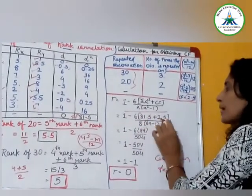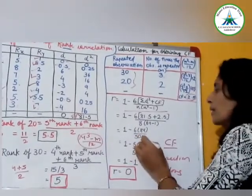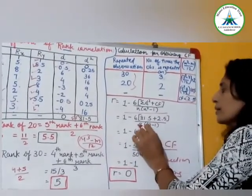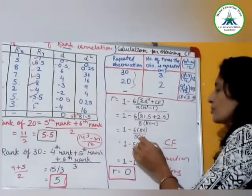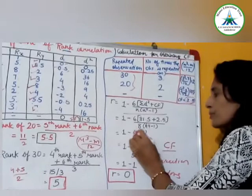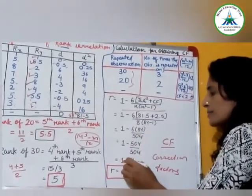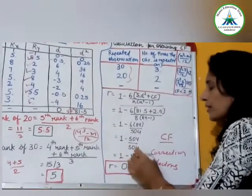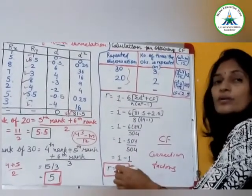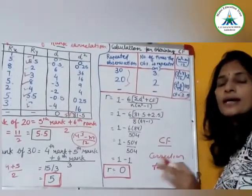1 minus, again 84 into 6 is 504 upon 504, so answer is 1. Here 1, so answer is r equal to 0. It means what? No relation between x and y.